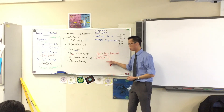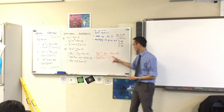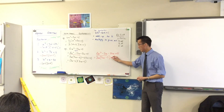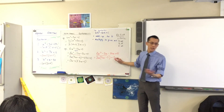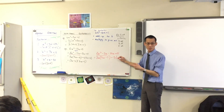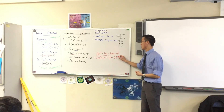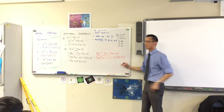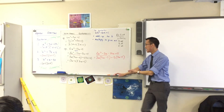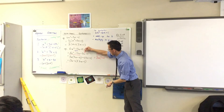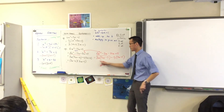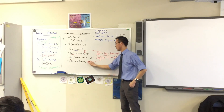That looks familiar, doesn't it? Is there a common factor in the second pair? I'm going to choose to take out minus 5 — I could take positive 5 if it was convenient, but this time minus 5 is more convenient, leaving me with 3. One of the nice things about this strategy is that whichever way you go, you'll still end up at the same answer.